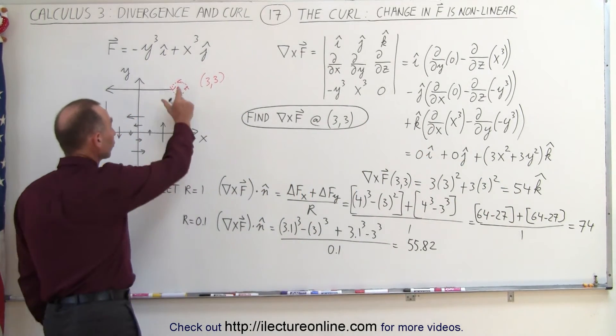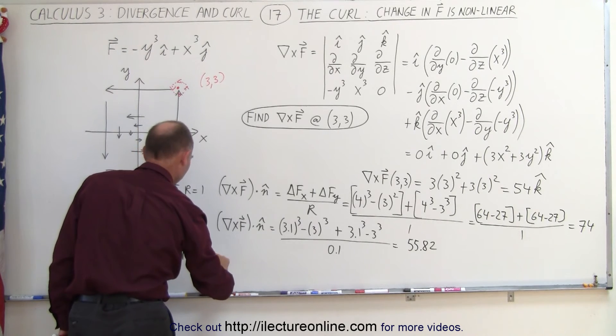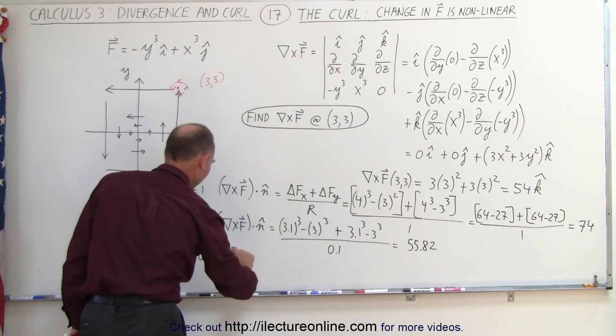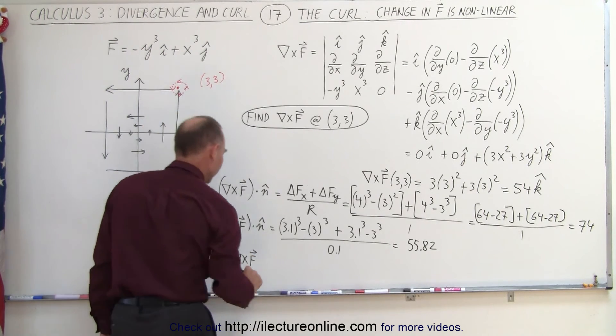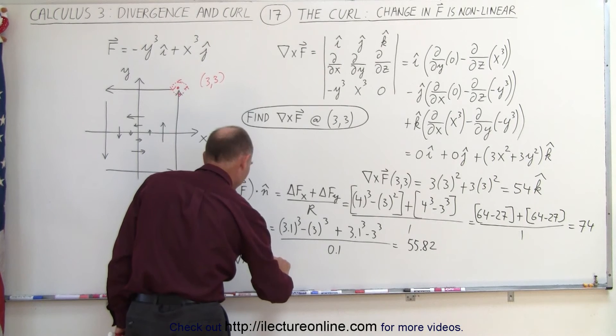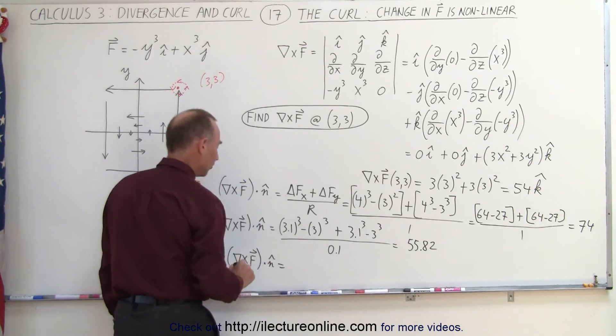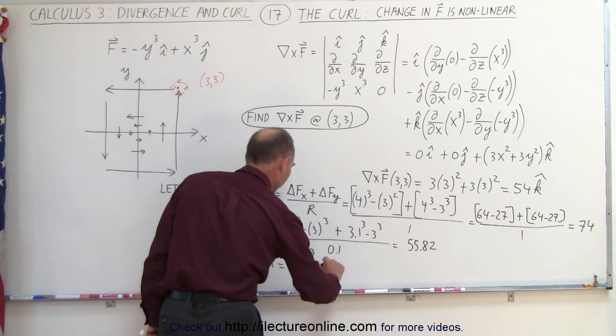Again, I'm going to make the circle smaller, and I'm going to let r equals 0.01, and I'm going to again find the change in the value of the vector field as I move in the x direction and move in the y direction.